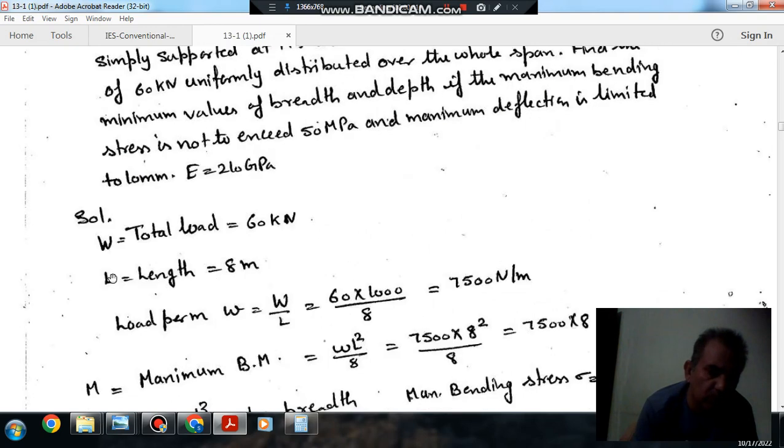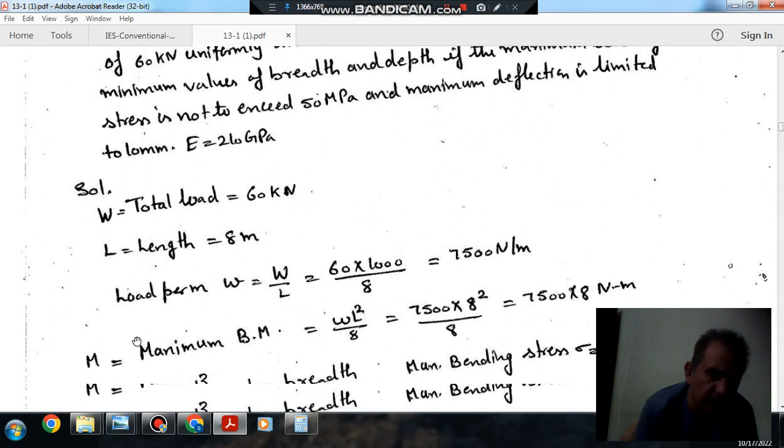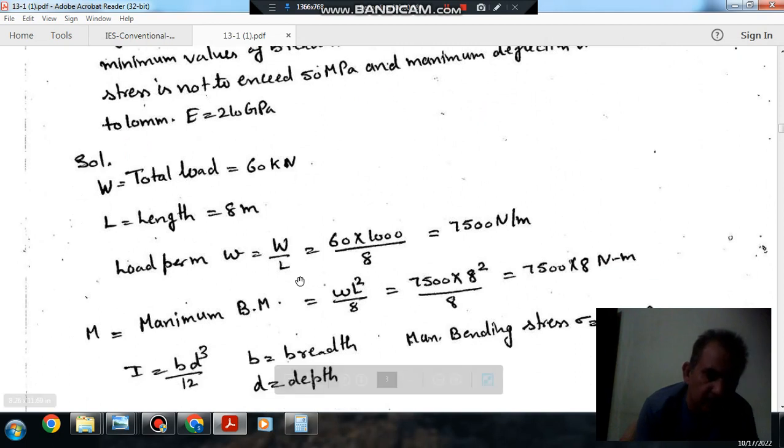So, total load is 60 kN and length is 8 meters. Uniform load per meter is W by L, that is 60000 by 8 equals 7500 N/m. And maximum bending moment is WL square by 8.